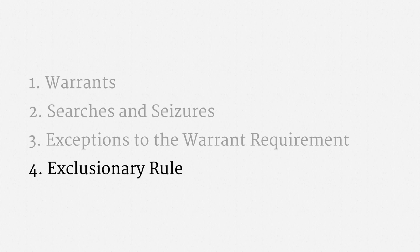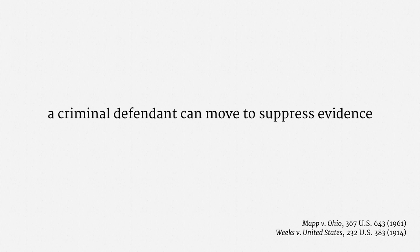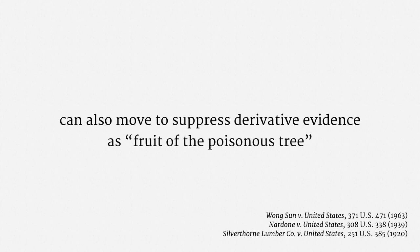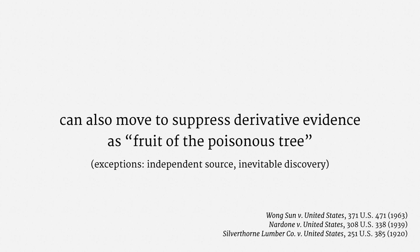Next up is the exclusionary rule. The rule is pretty simple: a criminal defendant can move to suppress evidence that was obtained in violation of their Fourth Amendment rights. So it's an evidentiary rule that applies in criminal cases. A corollary is that a criminal defendant can also move to suppress derivative evidence — that is, evidence developed because of the Fourth Amendment violation — as so-called fruit of the poisonous tree. There are exceptions to the fruits doctrine where evidence arrives from an independent source or where the evidence would be inevitably discovered.